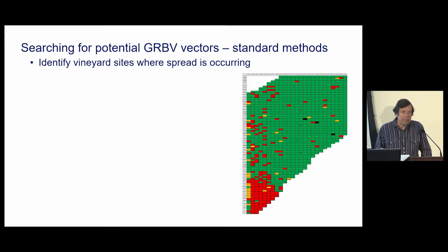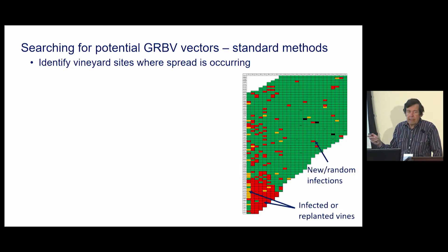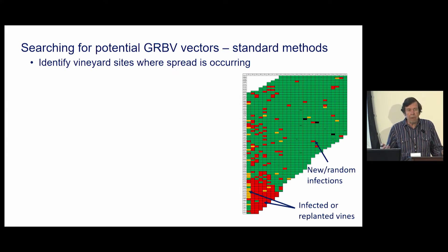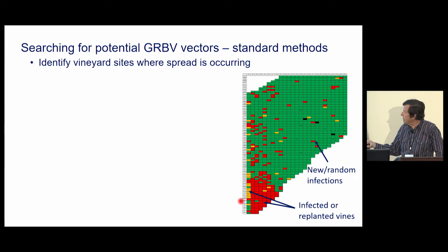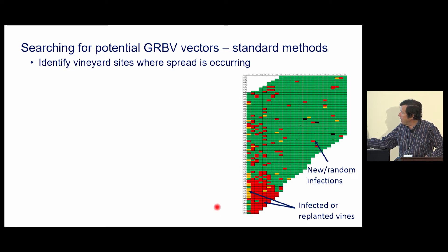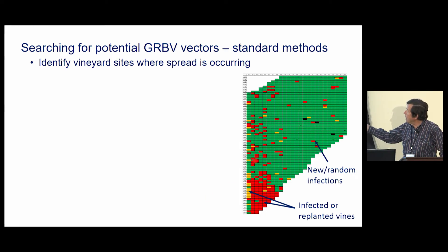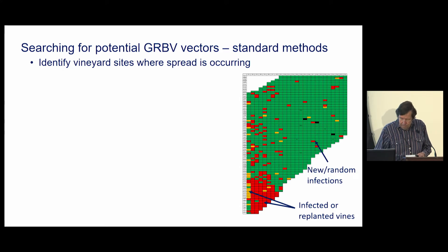This is a pretty good example of a vineyard that we were looking at at that time, and this is the kind of pattern that you see. Probably the majority of red blotch infested vineyards were infested prior to us knowing that there was a virus responsible for red blotch, so it was planted in the entire vineyard in the planting stock. But we did see instances where there was an infested vineyard next to it, and we would see individual hits that were new and random infections farther beyond that initial point of infection.